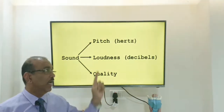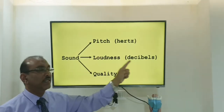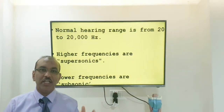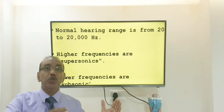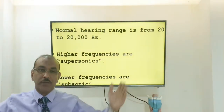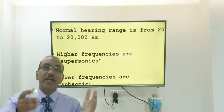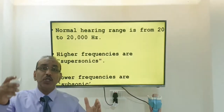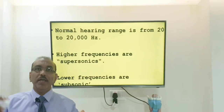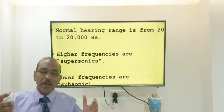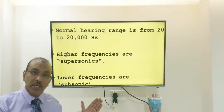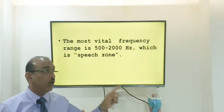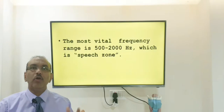So we've seen the three characteristics: pitch measured in hertz and loudness in decibels. The normal pitch range humans can hear is from 20 hertz to 20,000 hertz. The normal speech zone we make use of is 500 to 2,000 hertz. Anything more than 20,000 hertz is suprasonic and any pitch less than 20 hertz is subsonic or infrasonic.